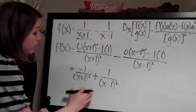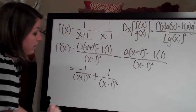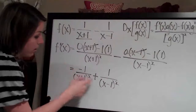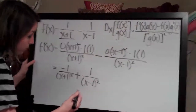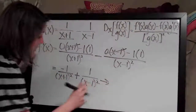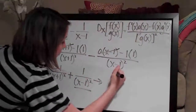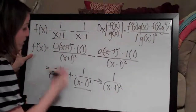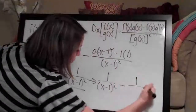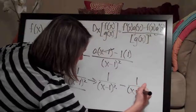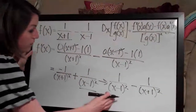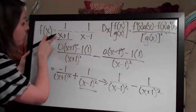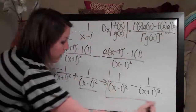I'm going to flip these because you don't usually want to lead the entire function with a negative sign. So the final answer becomes 1 over x minus 1 squared, minus 1 over x plus 1 squared. This is as simple as we're going to get — we applied the quotient rule to each fraction, simplified, and this is our final answer.